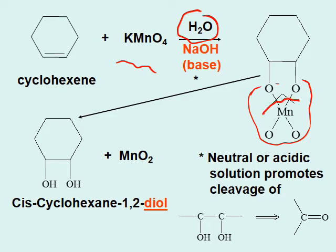Since two oxygens bond from the same side of the MnO4 complex, that gives syn addition. Finally, this bond gets broken and hydrogens get added, so you get two OH groups on the same side of the ring structure — that's why it's cis. The product is cis-cyclohexane-1,2-diol; 'di' means two, and 'ol' is the alcohol group.